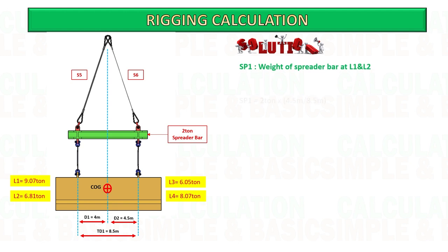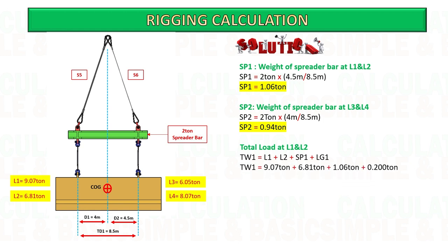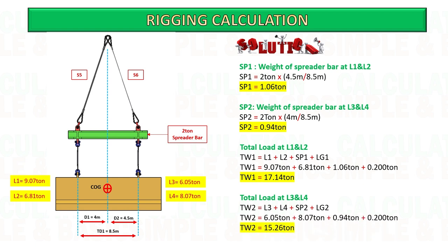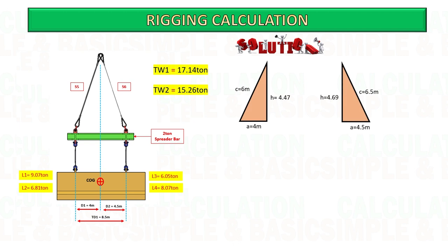Start to calculate the total load in each sling by adding the weight of the spreader bar and also the lifting gear weight. I assume the weight of lifting gear is 0.2 ton. Once you get the total weight for each side and the height of the sling, start to calculate the wire sling tension. See the formula and calculation below. You can pause the video and follow the calculation.